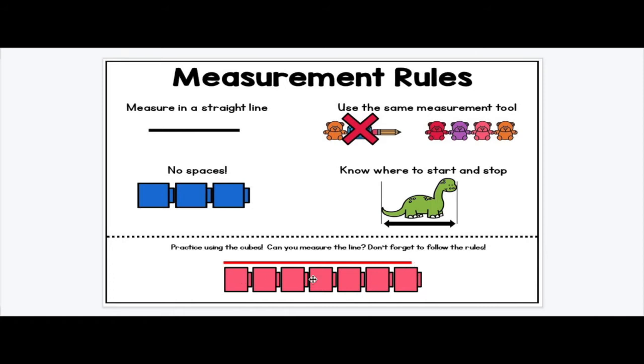It goes a little bit off, but it's pretty close right at that square. So how many long is the line? One, two, three, four, five, six, seven. You can get close. We don't have to be exactly right with non-standard measurement.